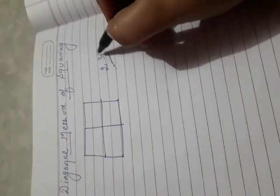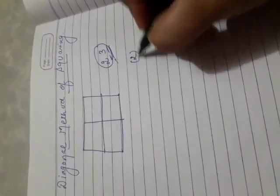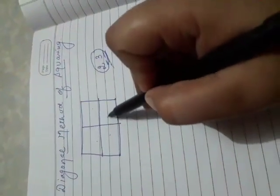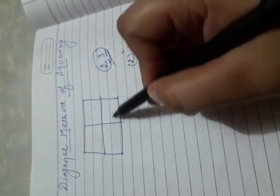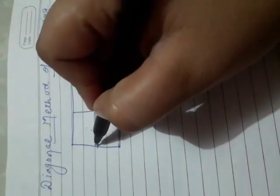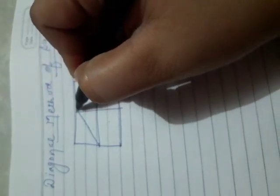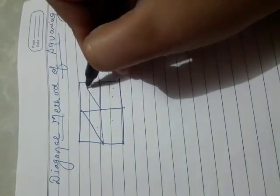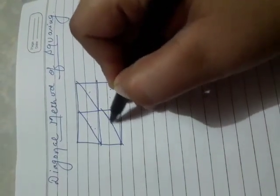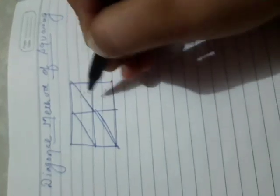Let the number be 23. We have to find the square of 23. How many digits are there? 2. So 2 squared is 4 — make 4 boxes: 1, 2, 3, 4. Divide each box in the shape of a triangle.